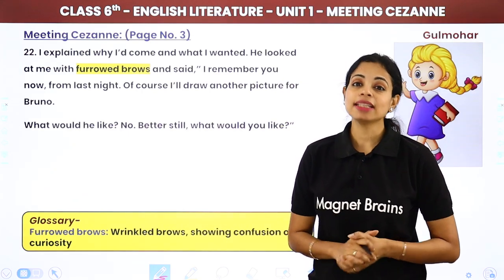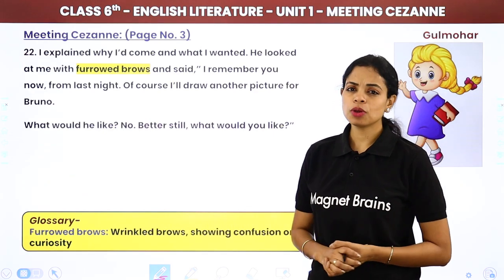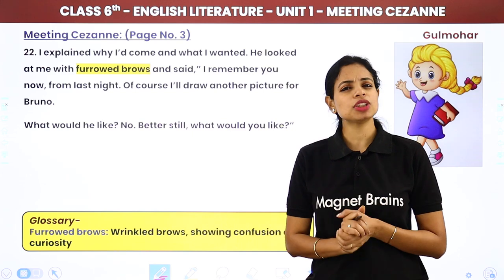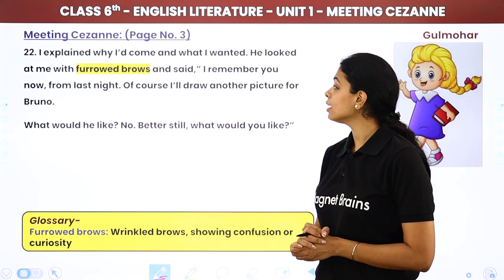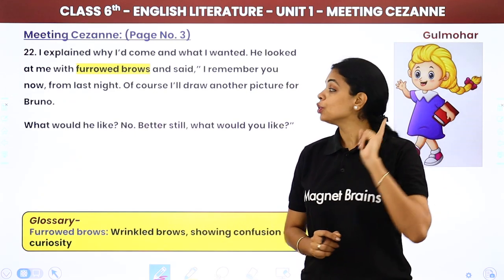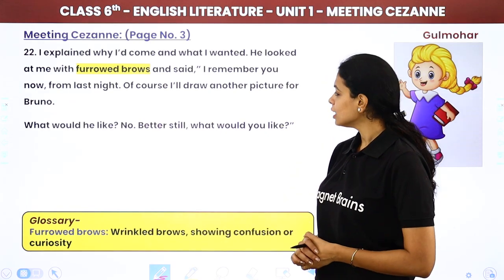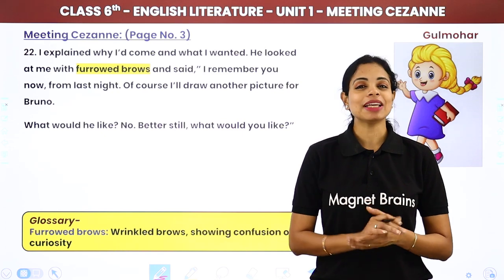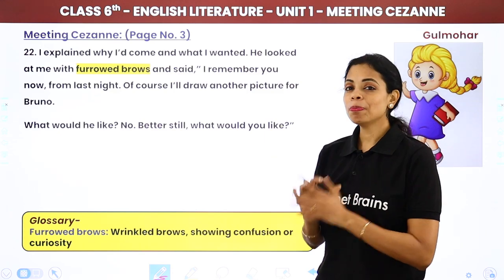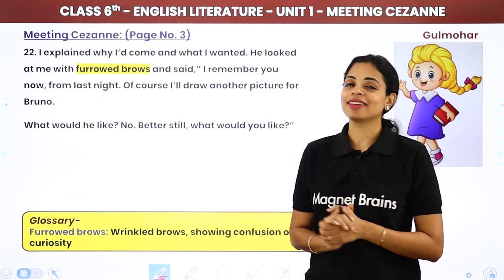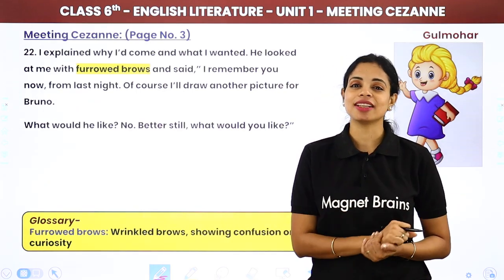Yannick explained why he had come and what he wanted. The old man looked at him with furrowed brows — trying to remember — then said, 'I remember you from last night. Of course I'll draw another picture for Bruno.' He then asked what Bruno would like, and then said, 'Better still — what would you like?'